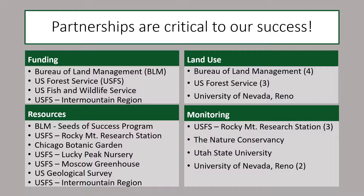It's really important to acknowledge that this work would not have been possible without a lot of help from our project partners. We received the bulk of our funding from the Bureau of Land Management, as well as funding from the Forest Service and the U.S. Fish and Wildlife Service. We also benefited from help with seed collection from the Seeds of Success program and the Chicago Botanic Garden. Seedlings were treated with care by the folks at the Forest Service Moscow Greenhouse and the Forest Service Lucky Peak Nursery. We had four gardens on Bureau of Land Management land, three gardens on Forest Service land, and one garden on academic property at the University of Nevada, Reno. We also received help with monitoring from the Nature Conservancy, Utah State University, and the University of Nevada, Reno.